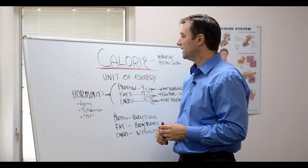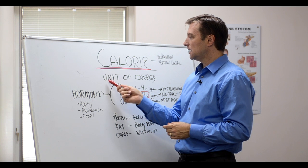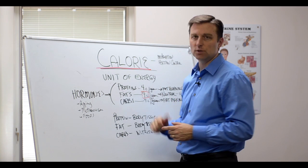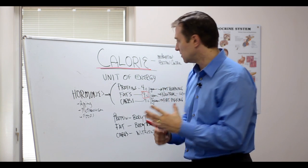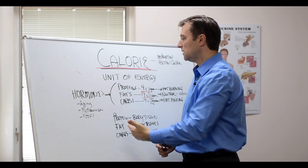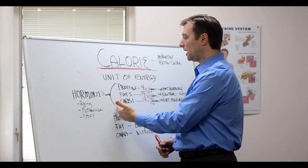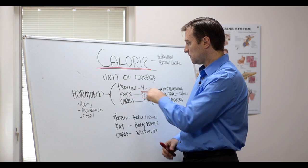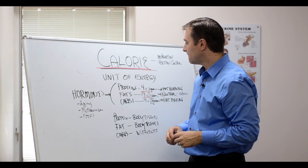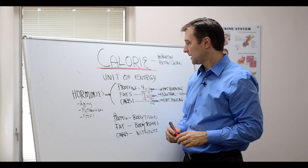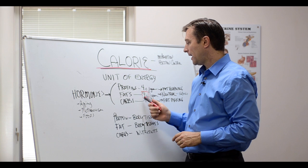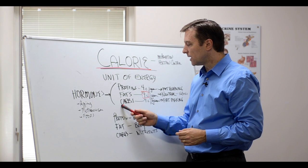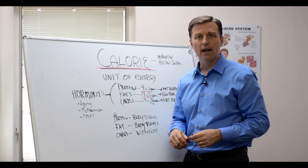So let's first define what a calorie is. Calories are units of energy in food. It's a unit of energy in food. So we have three basic types of food. We have proteins, we have fats, and we have carbohydrates. Proteins have four calories per gram and fats have nine calories per gram and carbohydrates have four calories per gram.